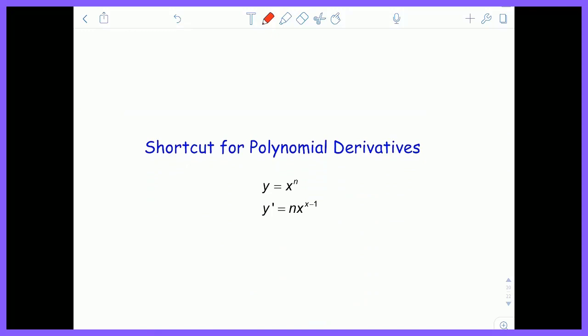The shortcut for a polynomial's derivative is if you have a polynomial of the form y equals x to the nth power, its derivative is going to be n times x to the—this is a typo actually, it should be n minus first power.